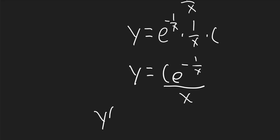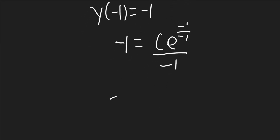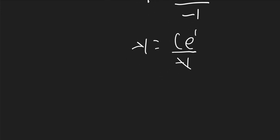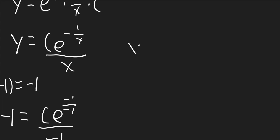So y will be equal to c e to the negative 1 over x over x. The initial condition said that y of negative 1 was equal to negative 1. So I'll plug those numbers in and find c. It'll be negative 1 is equal to c times e to the negative 1 over negative 1 over negative 1. So negative 1 will be equal to c e to the 1 over negative 1. Those negatives will cancel, so 1 will be equal to c times e. So c will be equal to 1 over e. Plugging that in, y will be equal to 1 over e times x times e to the negative 1 over x.